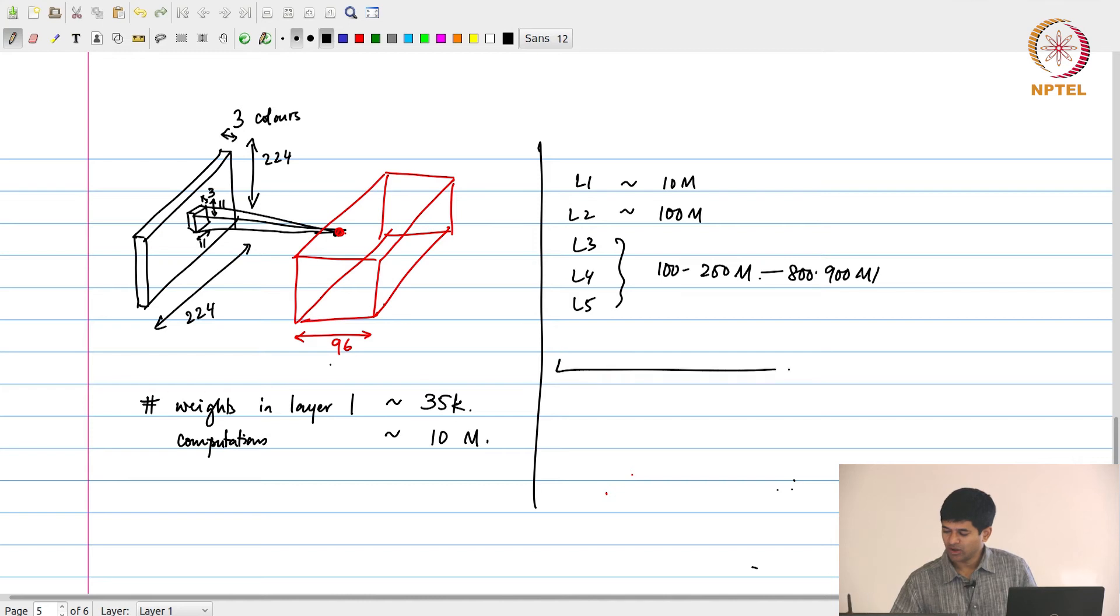When you add all of this together, the number that you come up with is somewhere around 1500 million multiply accumulate operations. At least the original AlexNet was just implemented using floating point computation because they were not very concerned about hardware implementation, they just wanted to demonstrate that the recognition worked. This basically is the number of floating point operations.